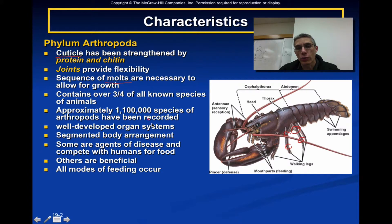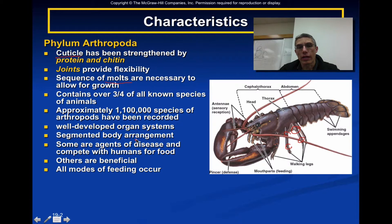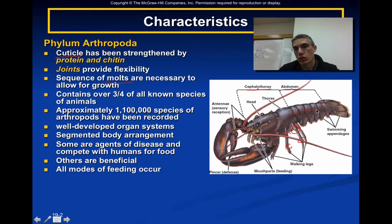We're not going to dissect into the chelicerates, but once we make our way into crustaceans, you will get a chance to look at the different organ systems represented in those animals. Arthropods also have a segmented body arrangement, similar to annelids. You can see the abdominal region and the cephalothorax region — two broad segments — and even these broad segments can be broken down into much smaller segments.